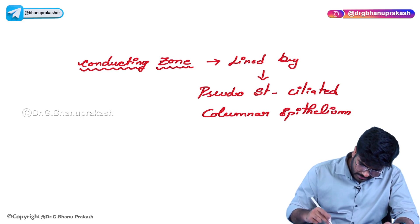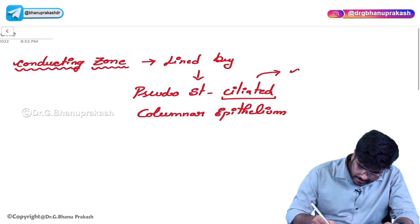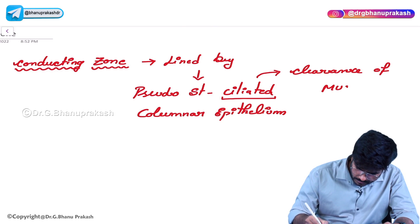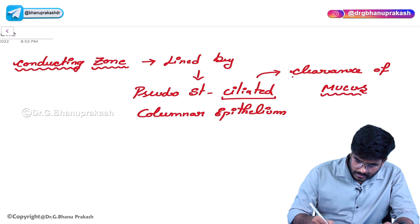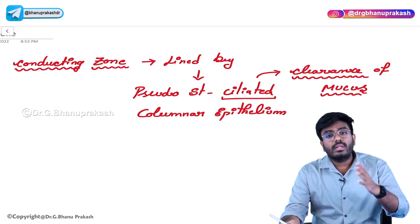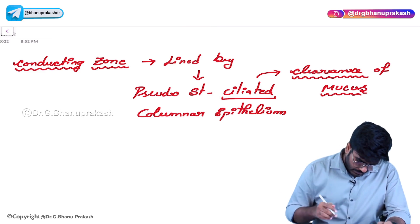Now, an important point is that the cilia present here are helping in clearance of mucus. So, from the respiratory tract, because of the mucociliary escalatory mechanism, the cilia are all the time sweeping away the mucus or the sputum.